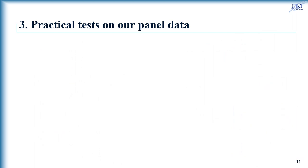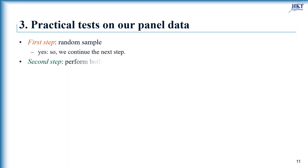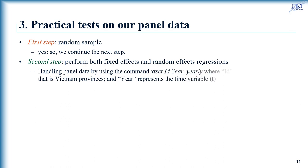Now we apply this process to choose a regression model for our panel data of Vietnam provinces. Our sample can be considered a random sample based on our choice of time span and FDI sector at provincial level in Vietnam. So we go to the second step, performing both fixed effects and random effects regressions using Stata. Before running these models, you need to set Stata to handle panel data using the command xtset.